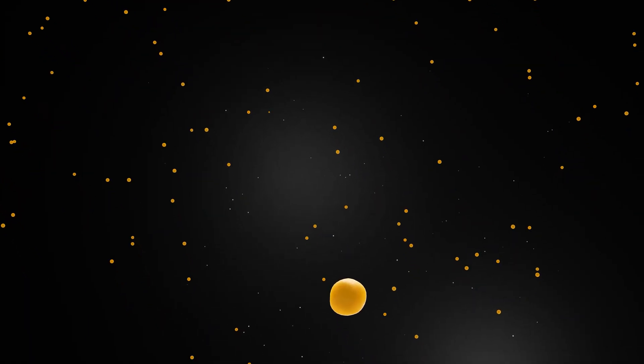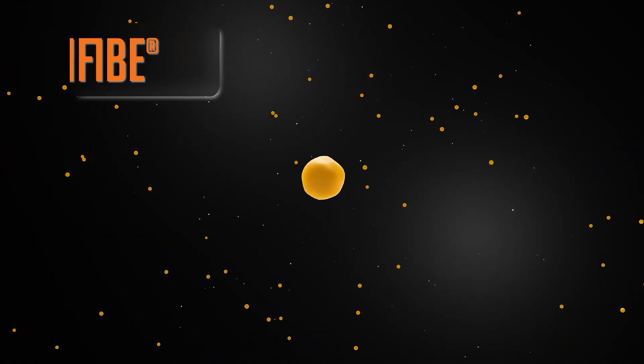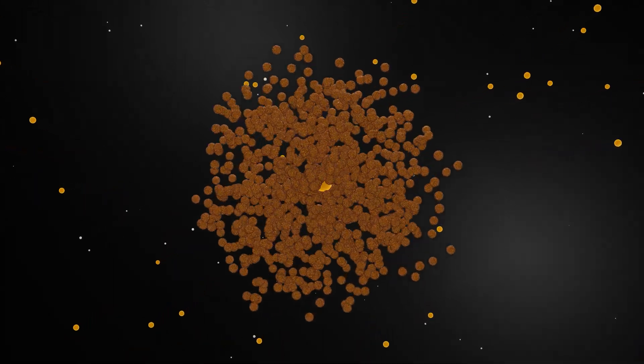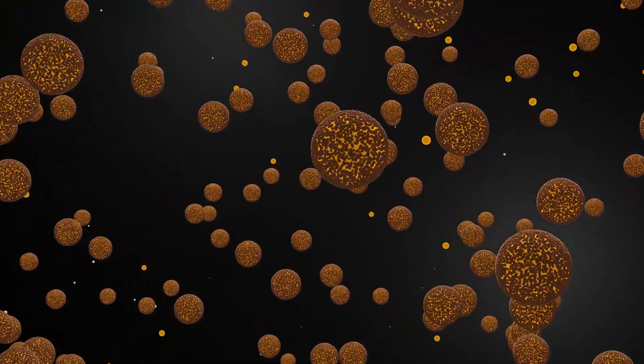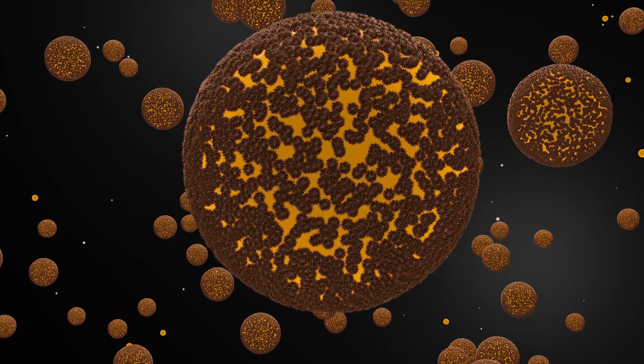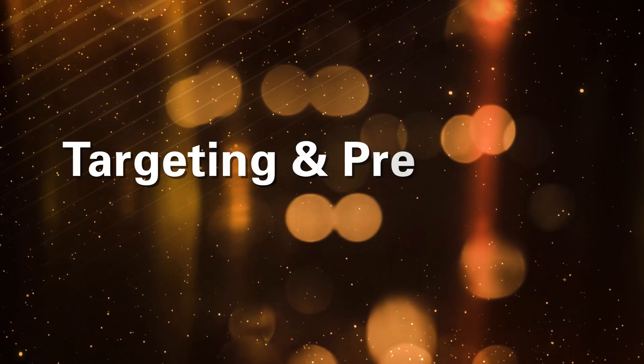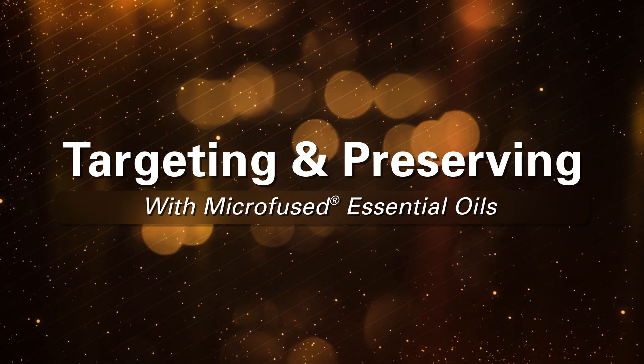The microfused process utilizes an exclusive prebiotic fiber called ActiFive to significantly reduce the essential oil droplet size. By surrounding each oil droplet with millions upon millions of water-soluble atoms, the essential oil transforms from a broad spectrum tool into a targeted weapon against pathogens. Let's explore how microfused essential oils can target pathogens while preserving beneficial bacteria.